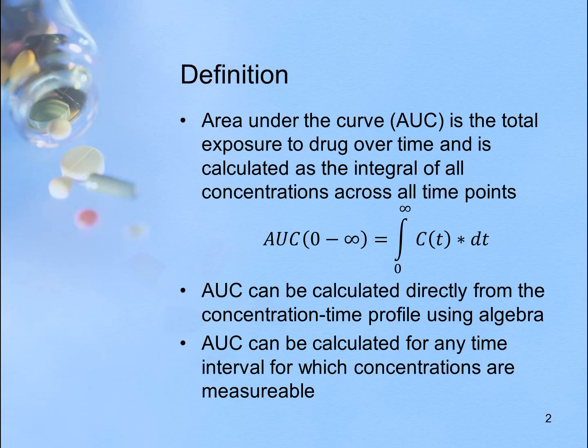AUC can actually be calculated directly from the concentration time profile data using simple algebra — adding and multiplication. AUC can also be calculated for any time interval for which concentrations are measurable. Those are called partial areas, and we'll talk about those a little bit later.